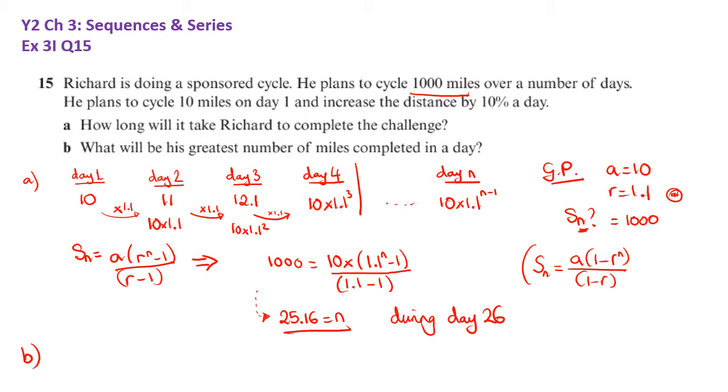The greatest number of miles completed in a day. We can see from our sequence 10, 11, 12.1 and so on, it's increasing every day. Every day he's doing more miles. So the day that he's done the most will be just before this end value. So it will be on day 25, the last full day before he hits the day where he reaches a thousand miles. The last full day is day 25. So on day 25.